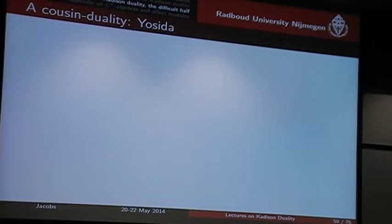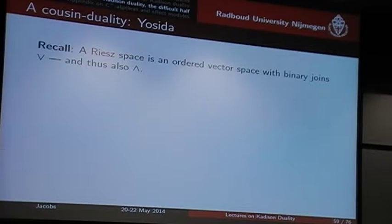What I'd also like to briefly mention is Yosida — or sometimes called Stone-Yosida — duality, which is about Riesz spaces. It's very close to what I've done so far, and I might as well discuss it briefly now. A Riesz space is a vector space, an ordered vector space, which also has a join of vectors.